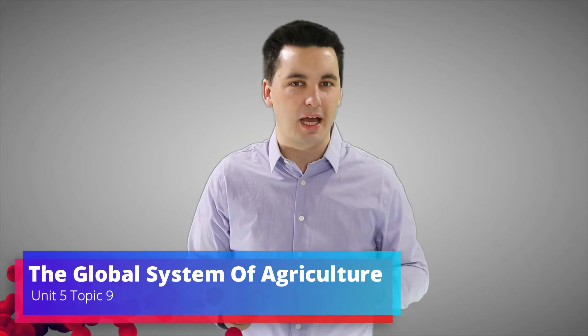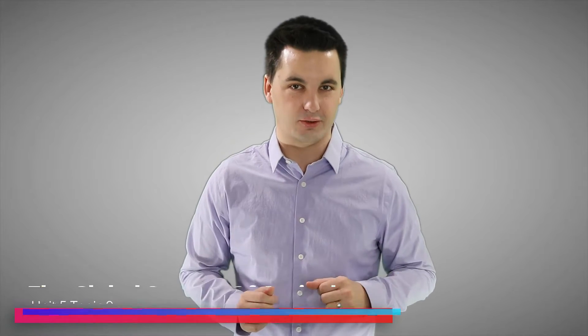Last time we talked about Von Thünen's model of agriculture. Today we're going to be going into Unit 5, Topic 9, the global system of agriculture.